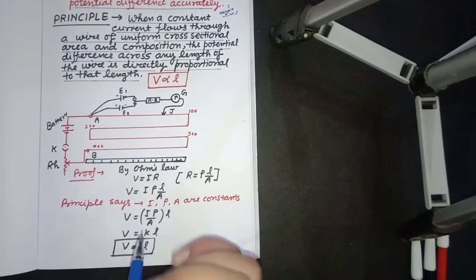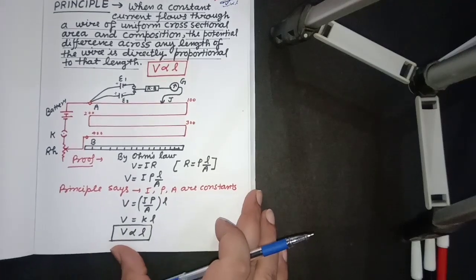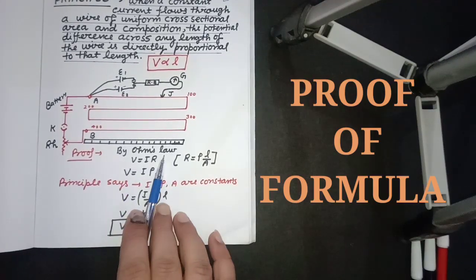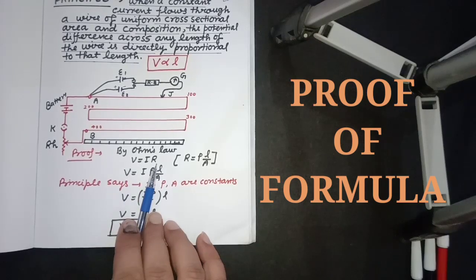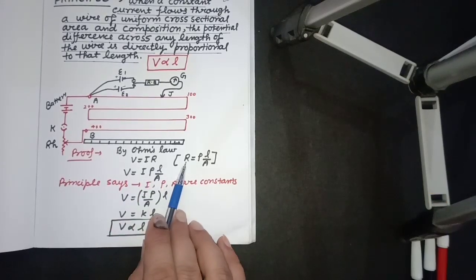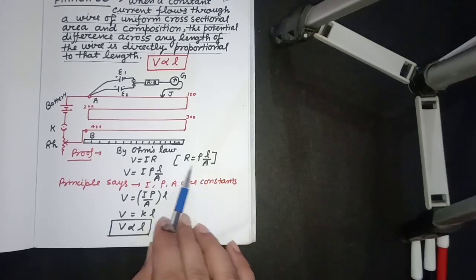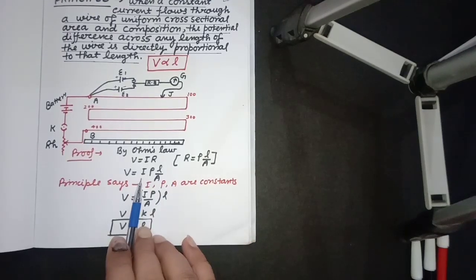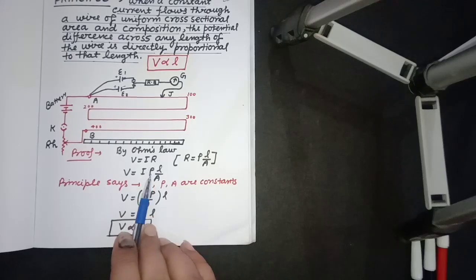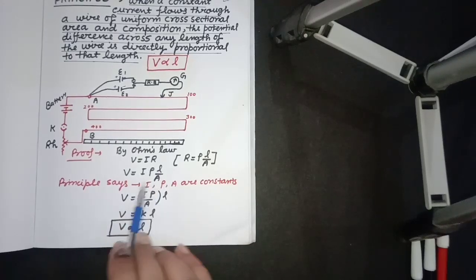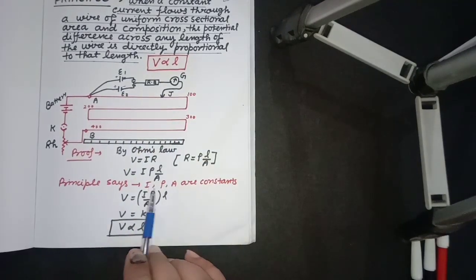To prove this, we use the formula from the previous chapter: V equals IR. Now we know that resistance R equals ρL/A, where ρ is resistivity. We put this formula here: R = ρL/A. Now we can see that the current is constant.